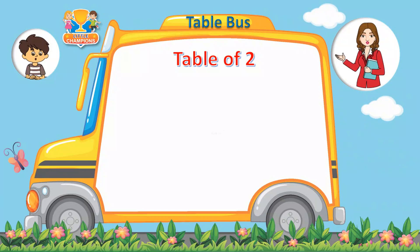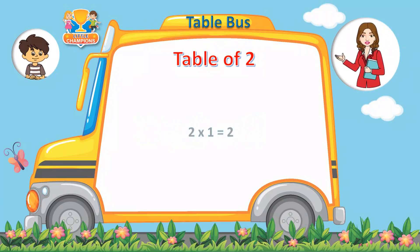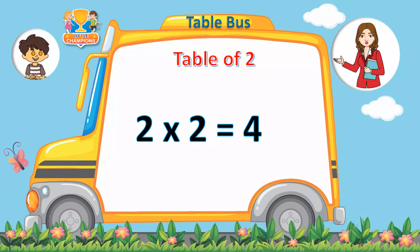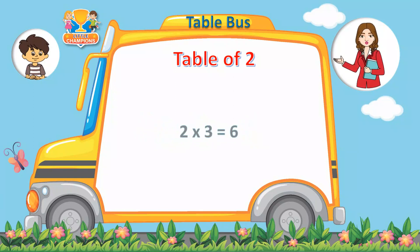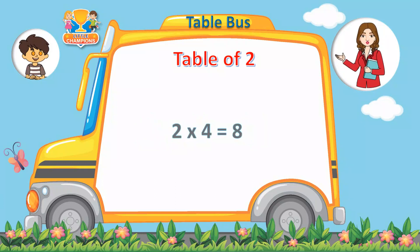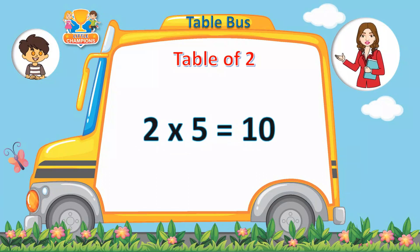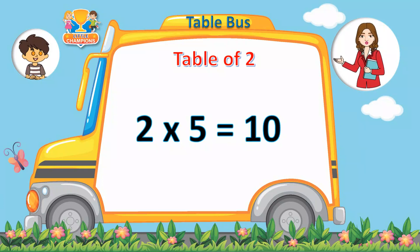Table of two. Two ones are two. Two twos are four. Two threes are six. Two fours are eight. Two fives are ten.